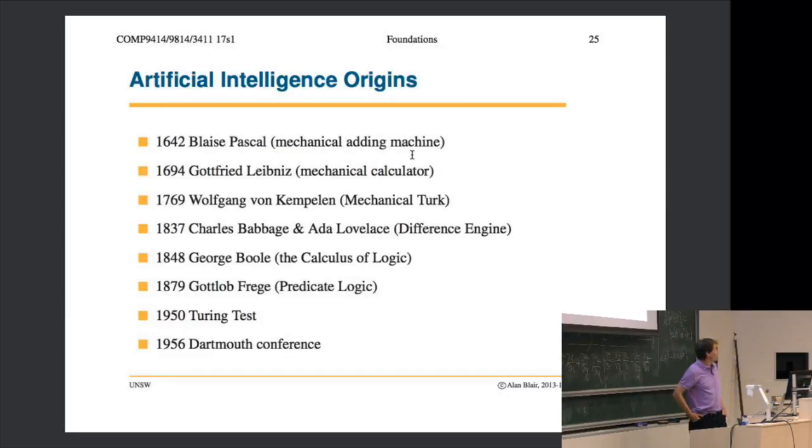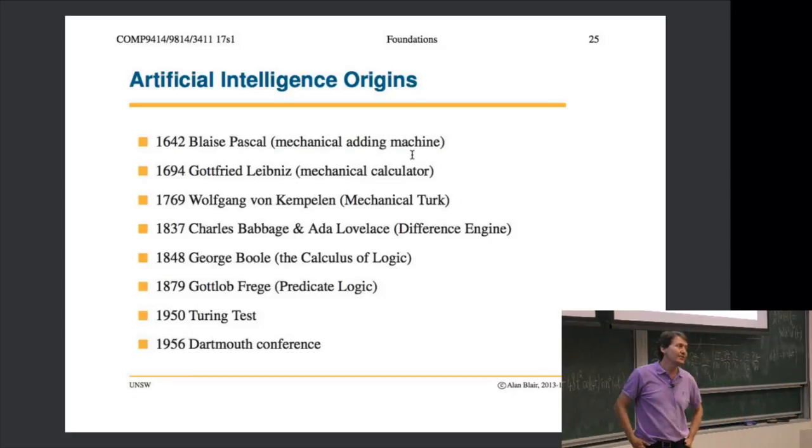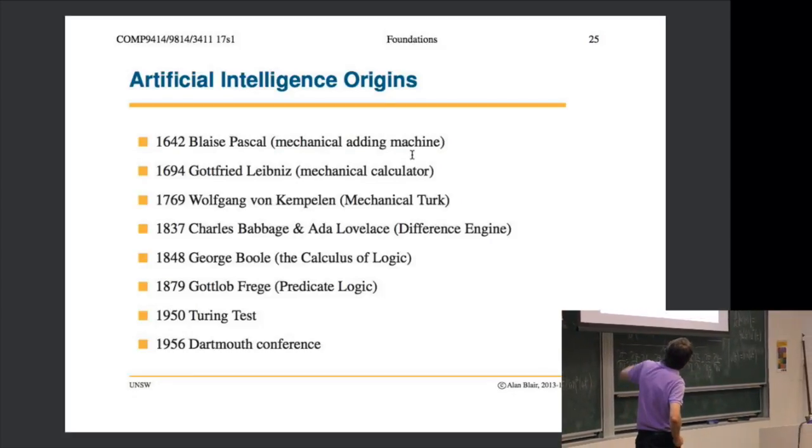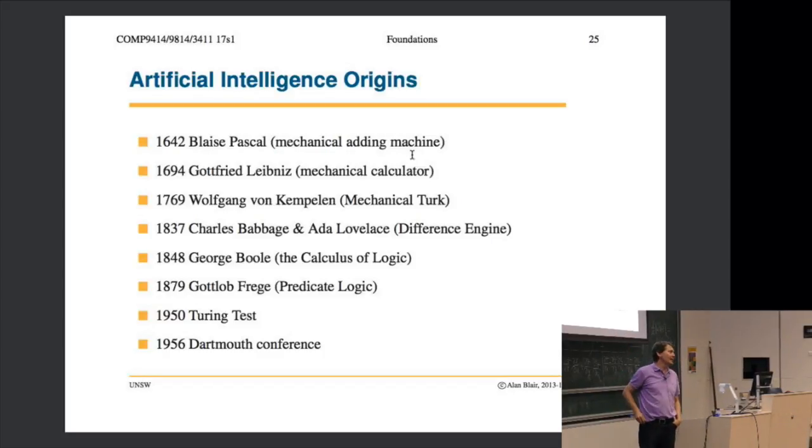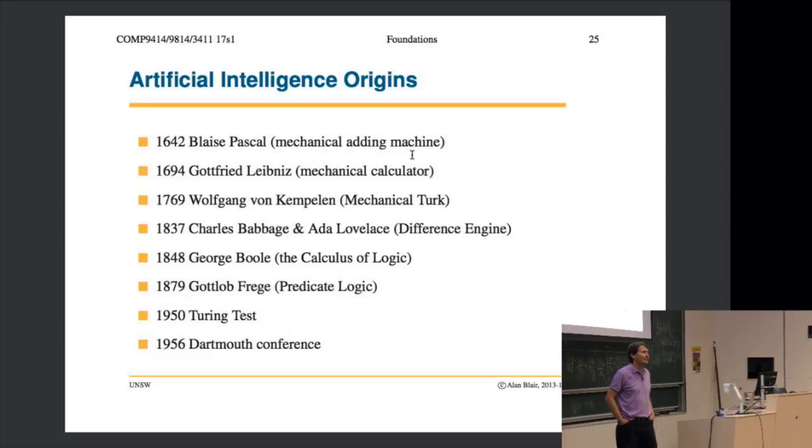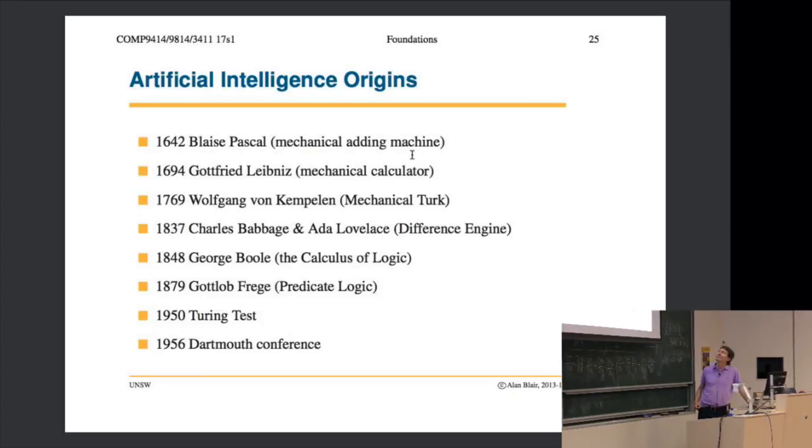If we trace the technical history of AI, these are the main events prior to the mid-20th century. There were early mechanical adding machines and calculators, von Kempelen's mechanical Turk. Babbage and Lovelace tried to build a purely mechanical computer in the 19th century. They didn't have enough money to do it, but it's been proven recently that if they'd had enough money they probably could have done it. Then George Boole and Gottlob Frege developed logic.